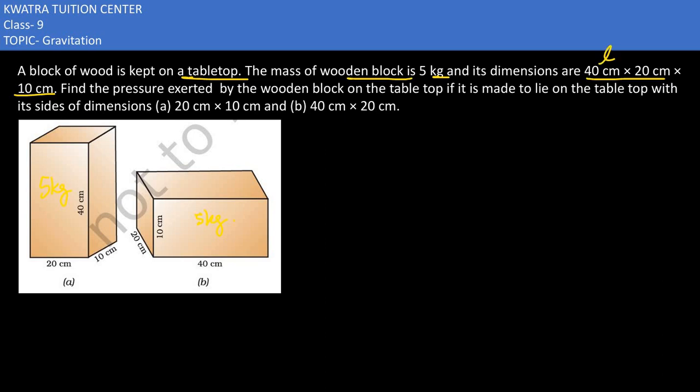40 basically is length, 20 is breadth and 10 is height. Then they are saying find the pressure exerted by the wooden block on the table top if it is made to lie on the table top with its sides of dimension 20 and 10. One time they say 20 and 10 respectively and one time they say 40 and 20 respectively.